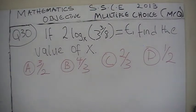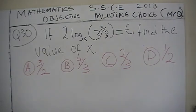Option B: 4/3. Option C: 2/3. Option D: 1/2.